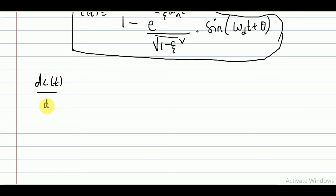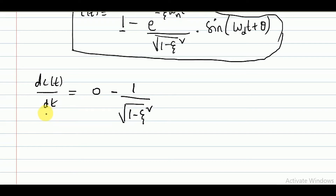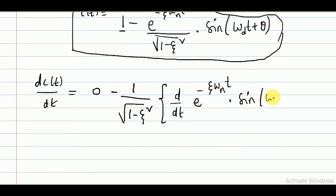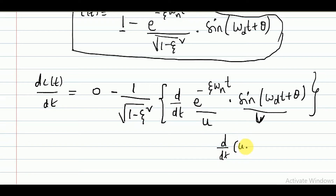Our aim is to differentiate c(t) with respect to t. Differentiating the constant 1 gives zero. I directly write zero and take −1/√(1−ζ²) as a common factor since t is not involved in it. We now need to differentiate d/dt of [e^(−ζω_n t) · sin(ω_d t + θ)], which can be done using the product rule formula d/dt(uv).